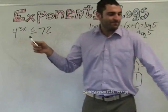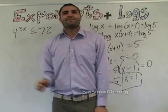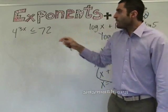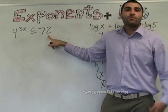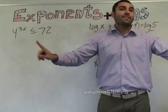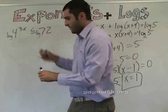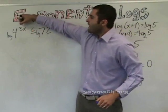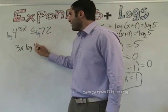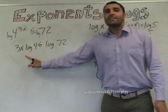Same base — what's the base here? Base four. Can we make this base four? No. What other base can we do? We can't make the same base, so we log both sides. Using properties of logs, if you have a number to an exponent it moves to the front: that'll be 3x log four equals log 72. Now we want to get x by itself.